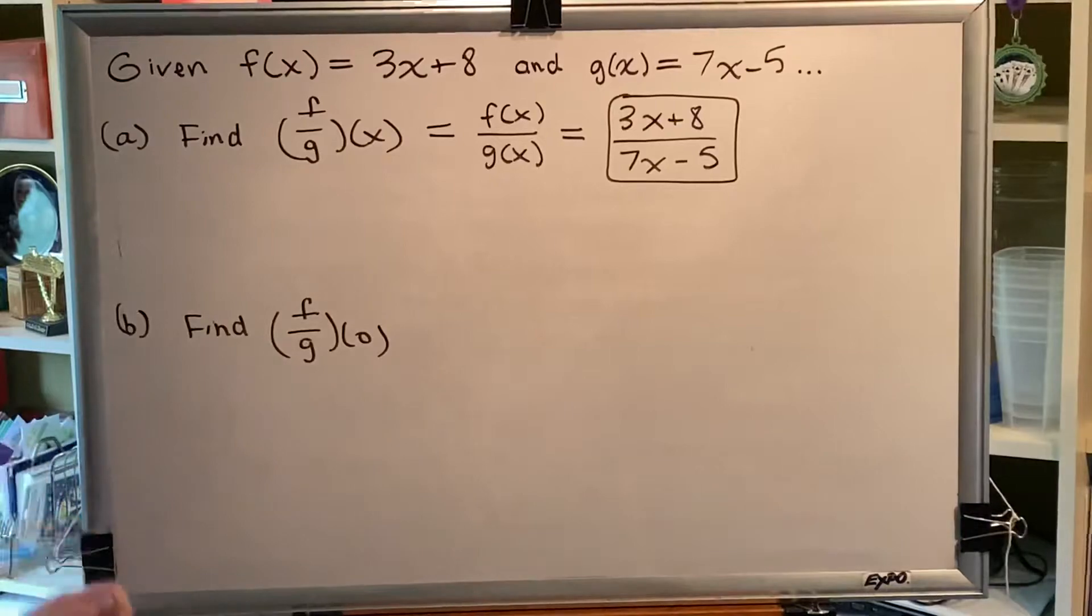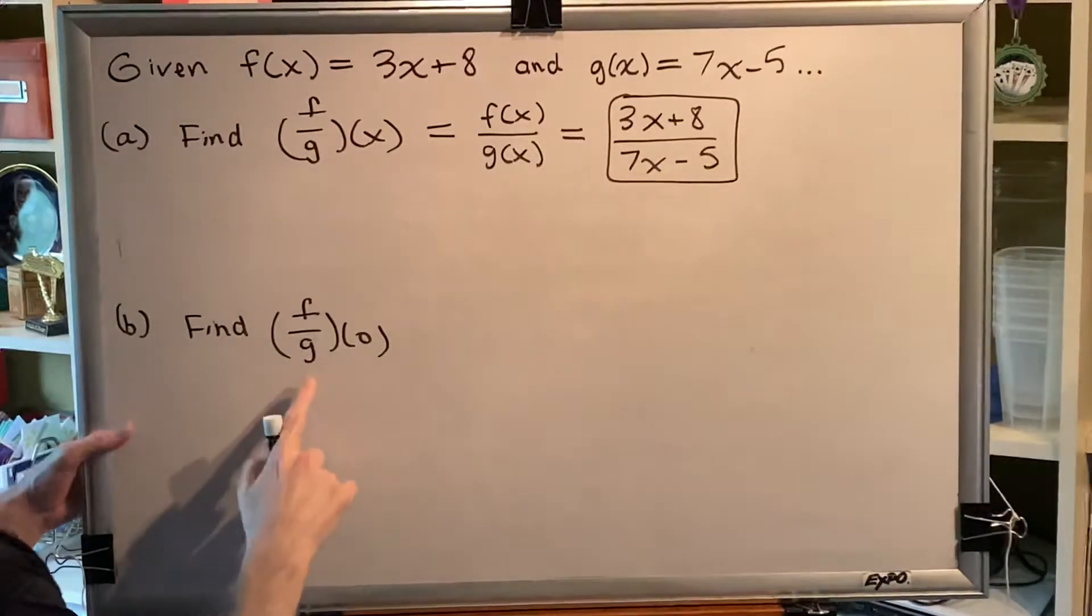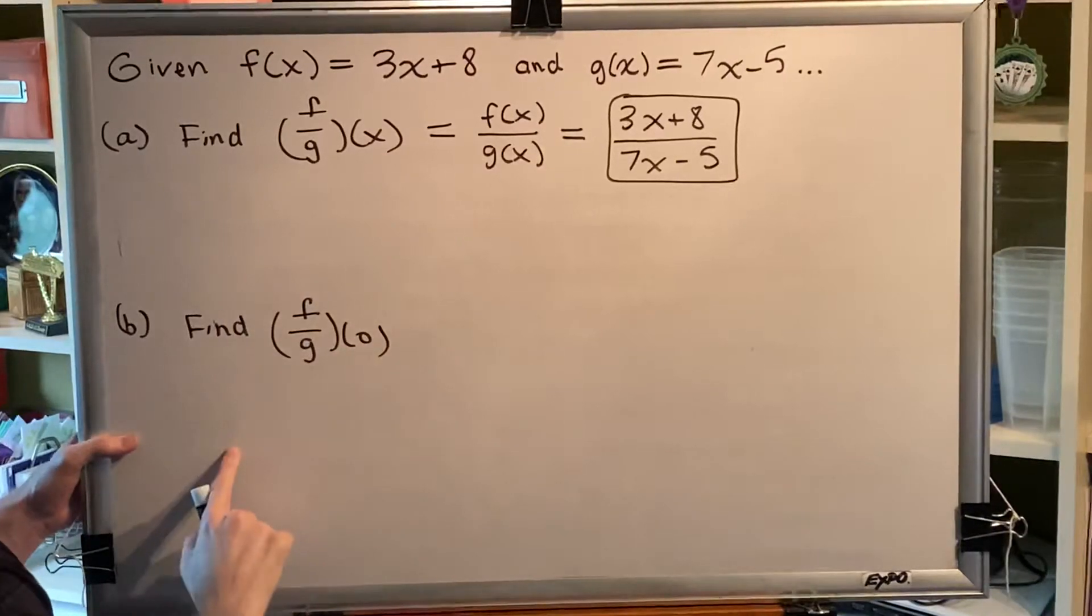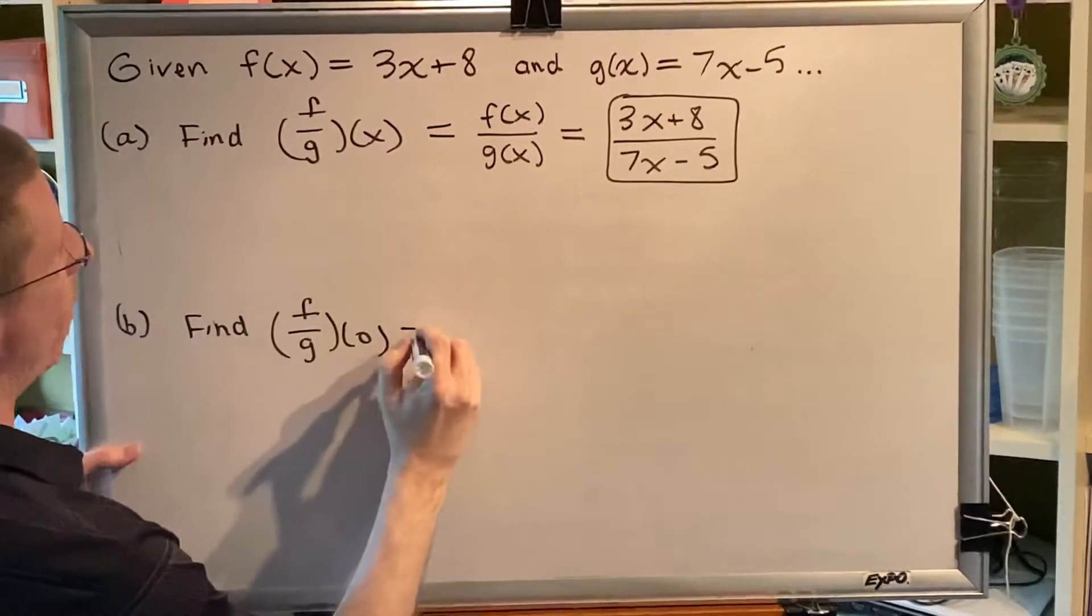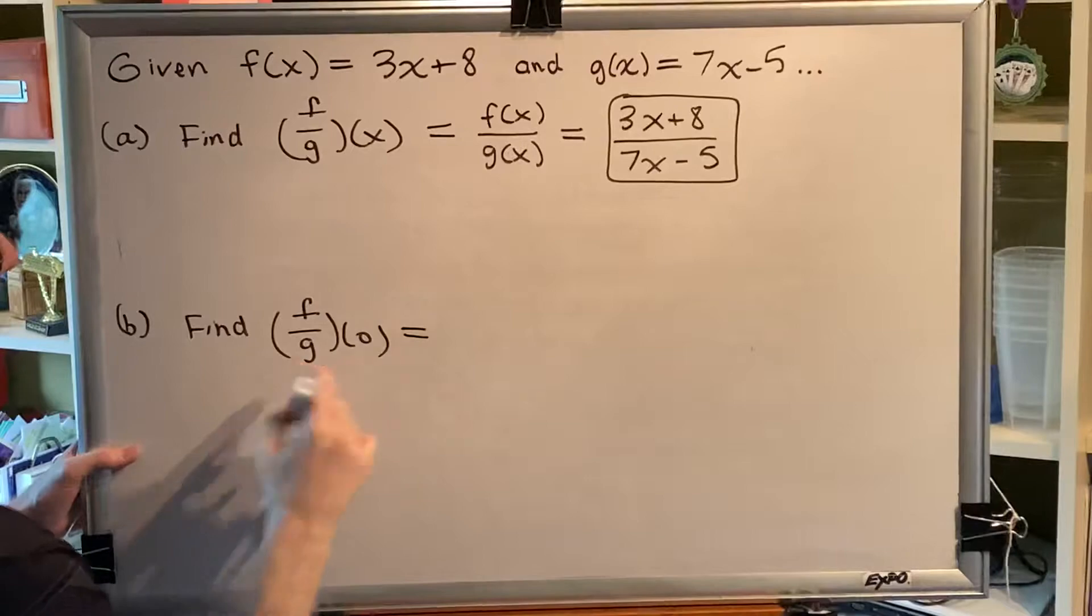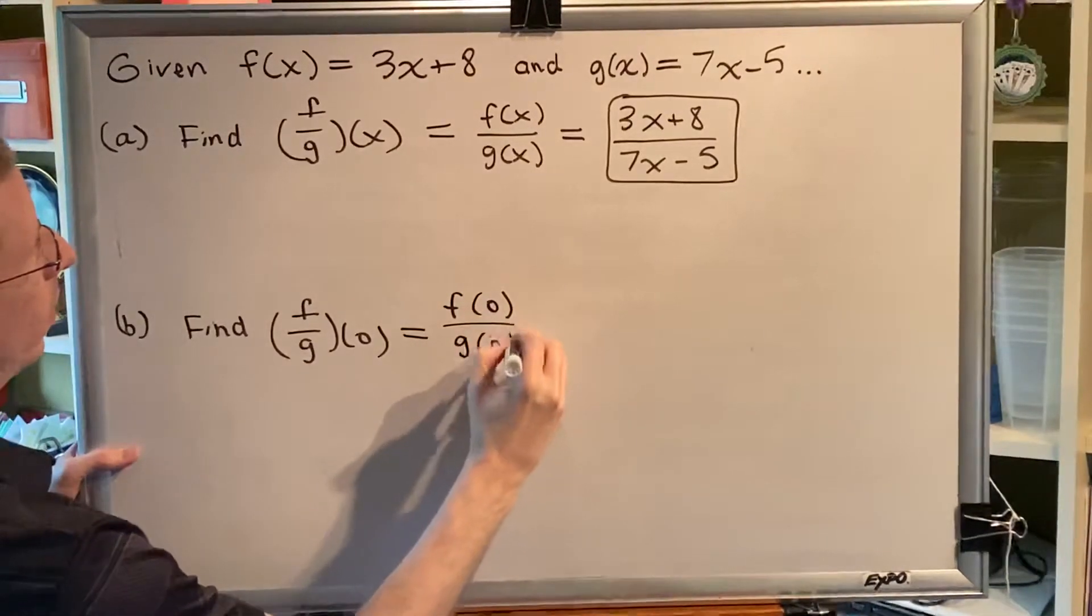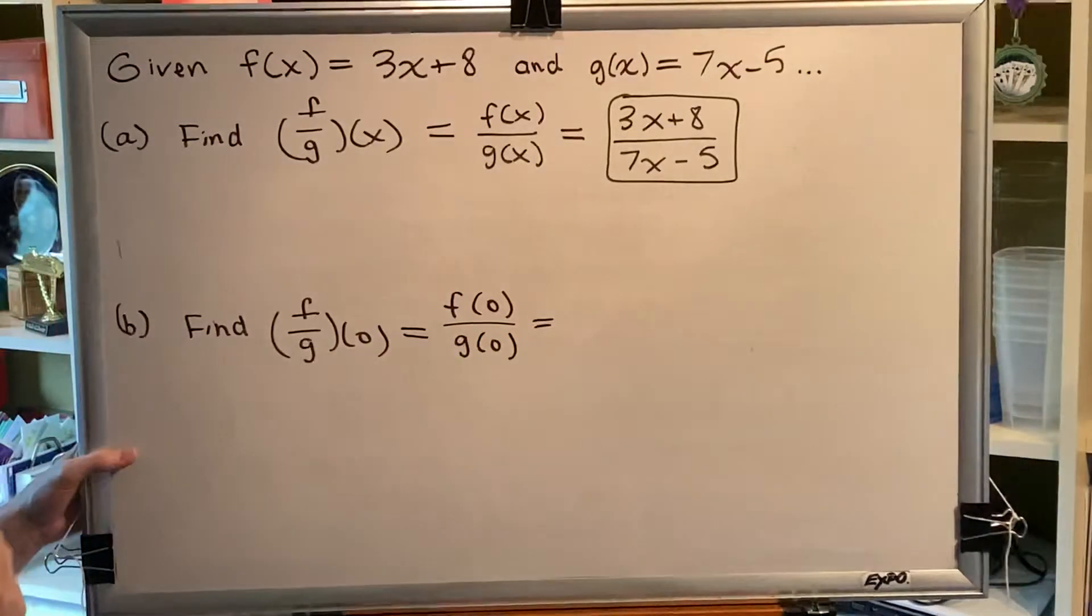All right, part b. This says instead of doing (f/g)(x) we're going to do (f/g)(0). What that means is you take your two functions f and g and you divide them but the input is going to be 0 instead of x.